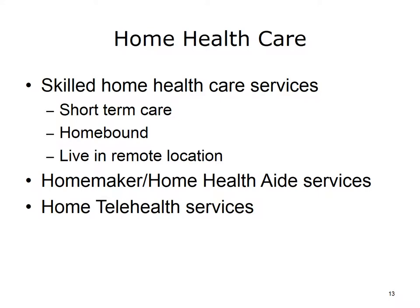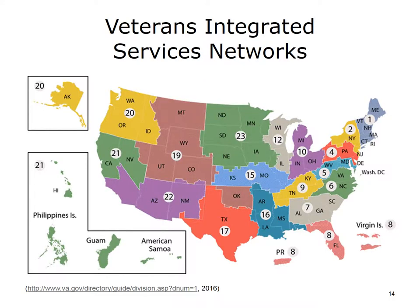Health care services can also be provided to veterans in their own home. Skilled home care services involve short-term care delivered by a community-based home health agency that has a contract with the VA for veterans who are homebound or live in a remote location. Homemaker and home health aid services can be utilized to help veterans remain in their own home. Home telehealth allows the veteran's physician or nurse to monitor the veteran's health remotely using home monitoring equipment. To minimize fragmentation of services, the Veterans Health Administration is divided into 21 numbered units called Veterans Integrated Services Networks, or VISN. Each network coordinates and supervises administrative activities and the provision of health care in its region. This map of the U.S. shows the states and territories included in each of the 21 units.